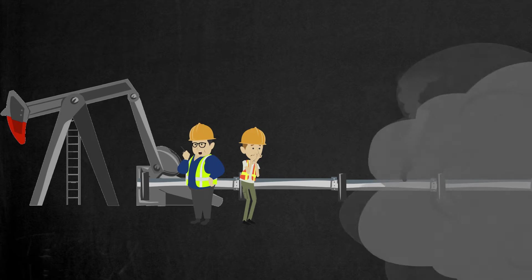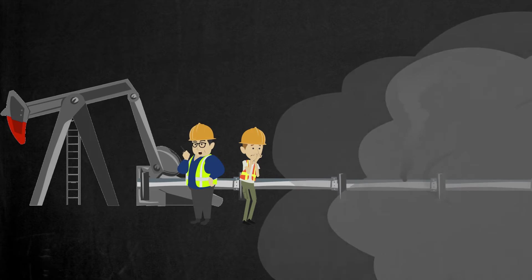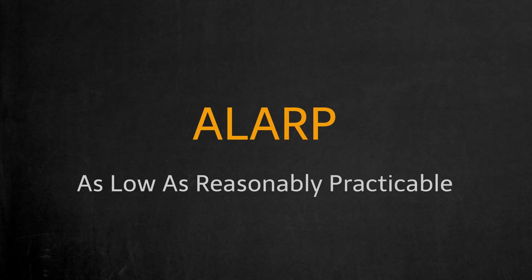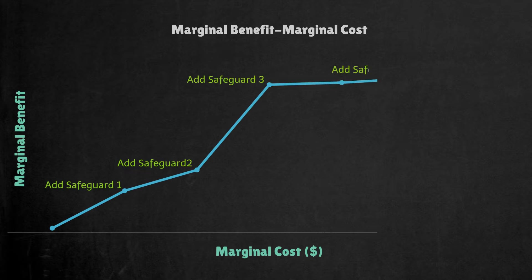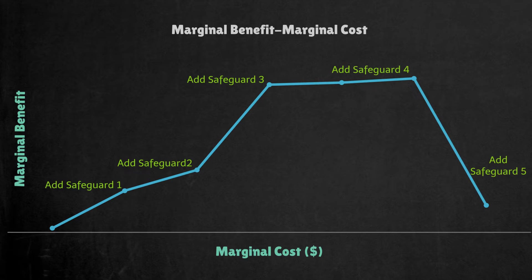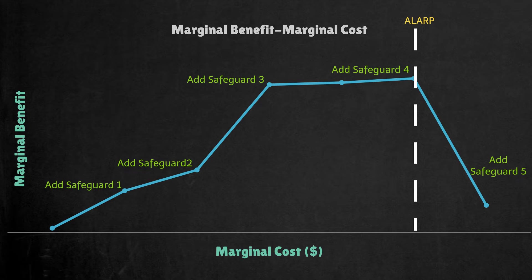Oil and gas processes are inherently dangerous, so no PHA can eliminate risk completely. However, it is expected that companies adopt the ALARP principle. ALARP stands for as low as reasonably practicable. Originating from the United Kingdom, it is a principle that the residual risk shall be as low as reasonably practicable. For a risk to be ALARP, it must be possible to demonstrate that the cost involved in reducing the risk further would be grossly disproportionate to the benefit gained. On the other hand, if a certain design can be improved with minimal cost and the improvement will reduce the risk significantly, the current design is unlikely to be considered ALARP.